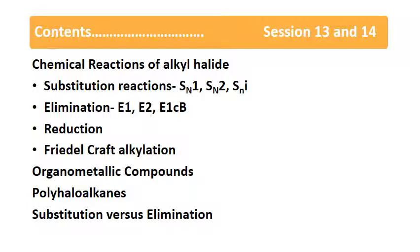Next is the Friedel-Crafts alkylation, which is a very good method to introduce an alkyl group into any benzene ring. Whenever an alkyl halide reacts with benzene in the presence of anhydrous aluminum chloride (AlCl3), it forms alkylbenzene.